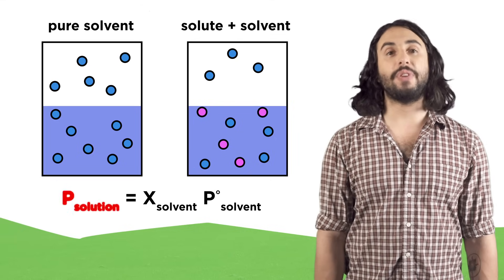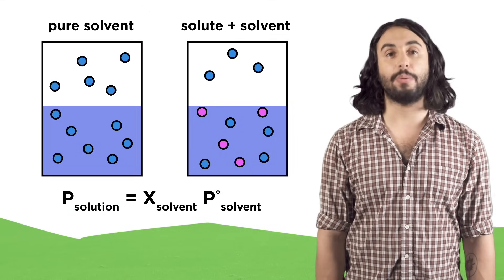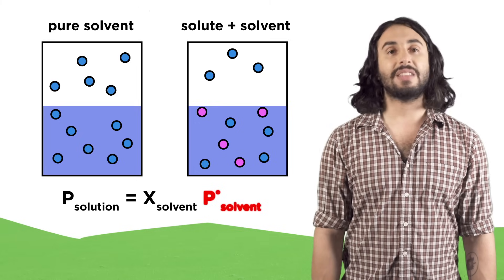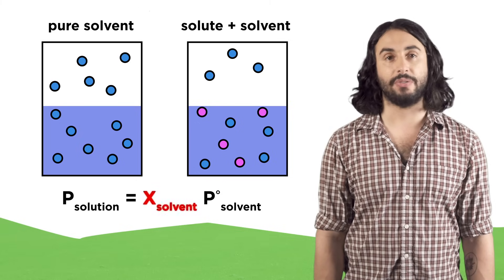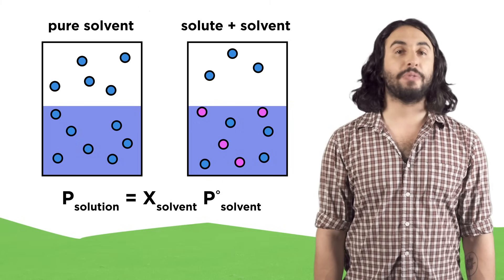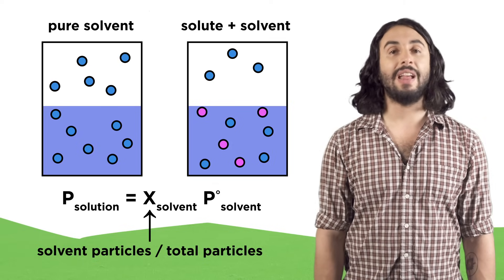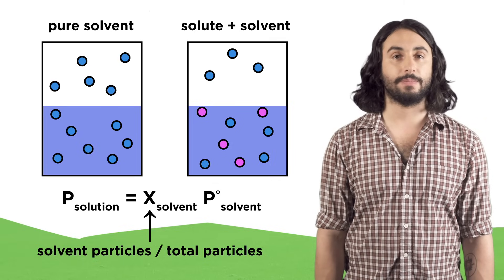The new vapor pressure is equal to the vapor pressure of the pure solvent times the mole fraction of the solvent, which refers to the percentage of particles in a solution that are solvent molecules.